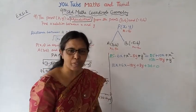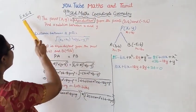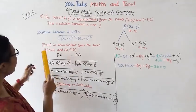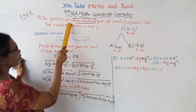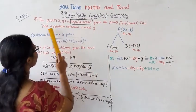Hello students, welcome to Maths and Tamil channel. 9th standard Maths coordinate geometry, exercise 5.2, question 9: The point (x,y) is equidistant from the points (3,4) and (-5,6).